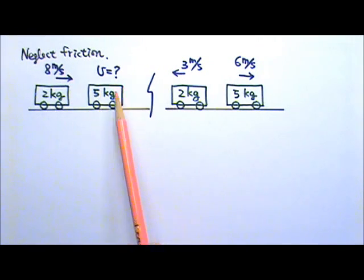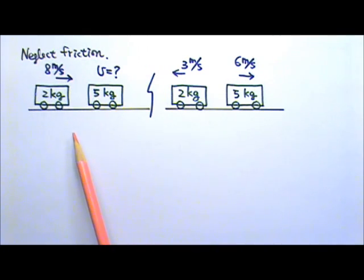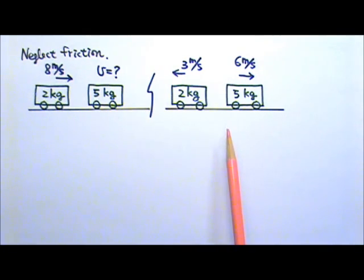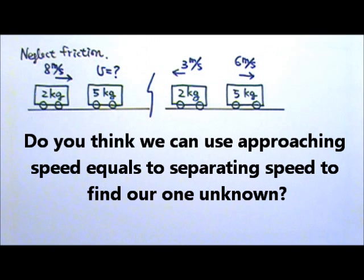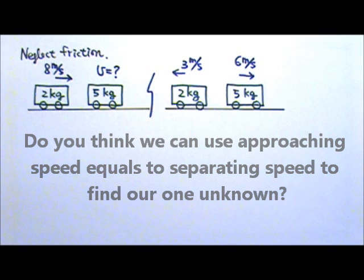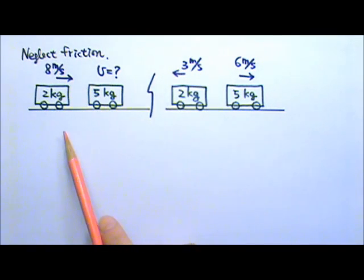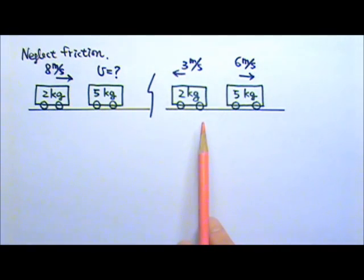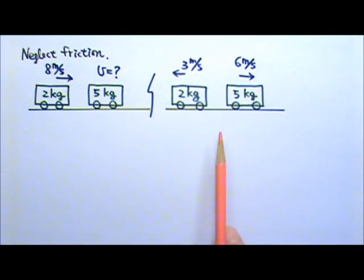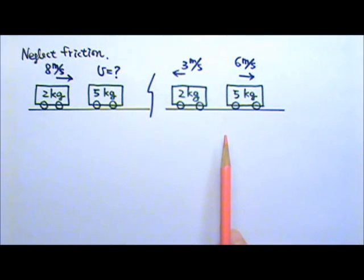There's only one unknown. Can we use approaching speed equals separating speed to find our unknown? No. Approaching speed equals separating speed is only good for one-dimensional elastic collisions. In this problem, there is no mention of the collision being elastic or kinetic energy being conserved, so we do not know whether this collision is elastic or not. Therefore, we cannot use approaching speed equals separating speed to solve this problem.